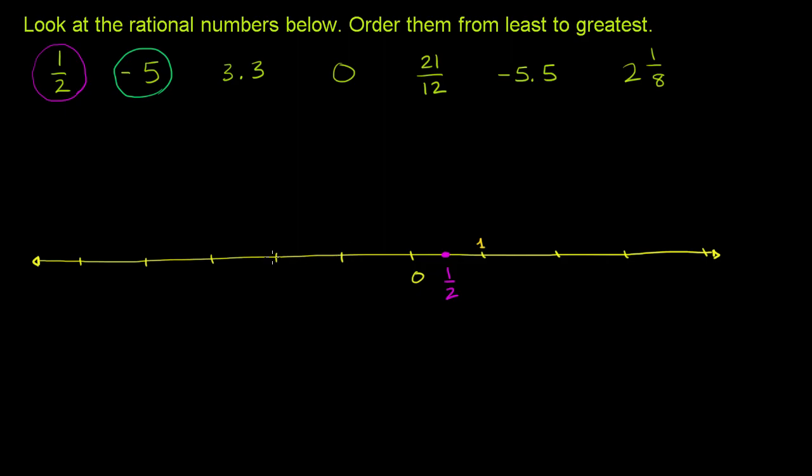Then we have negative 5. Well, this is negative 1, negative 2, negative 3, negative 4, negative 5. Negative 5 sits right over there.